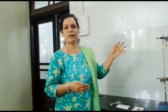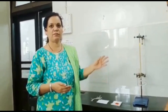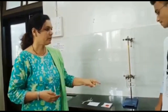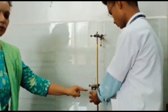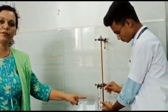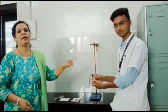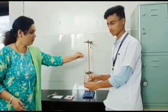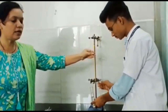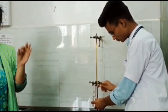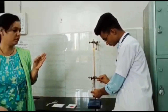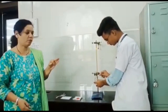Now we are going to see what assemblies we are going to utilize for today's experiment. Here we have the Thiele tube accompanied with paraffin oil, which has a very high boiling point. Along with this, we are going to utilize a thermometer where we can locate the exact temperature of the melting point.